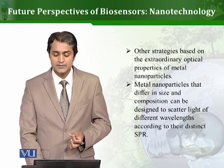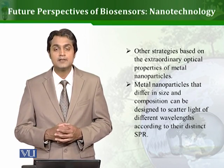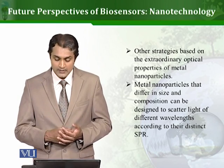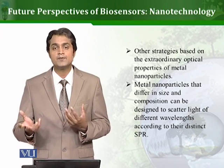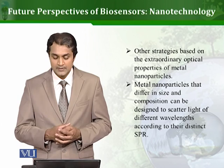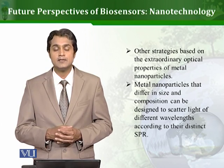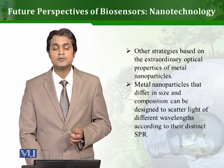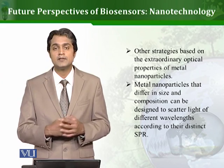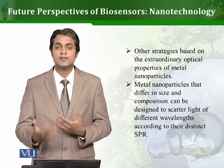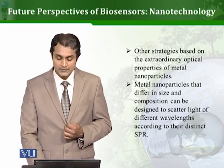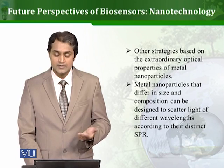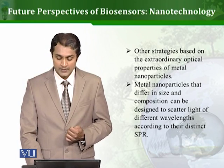Other strategies are based on the extraordinary signal properties of metal nanoparticles. Metal nanoparticles can be used when making biosensors. These metal nanoparticles differ in size depending on the metal and composition, and can be designed to scatter light of different wavelengths according to their distinct surface plasmon resonance. Based on different wavelengths of light, the metal will react differently and different types of signals will be observed. All these things can be used to make different types of biosensors.